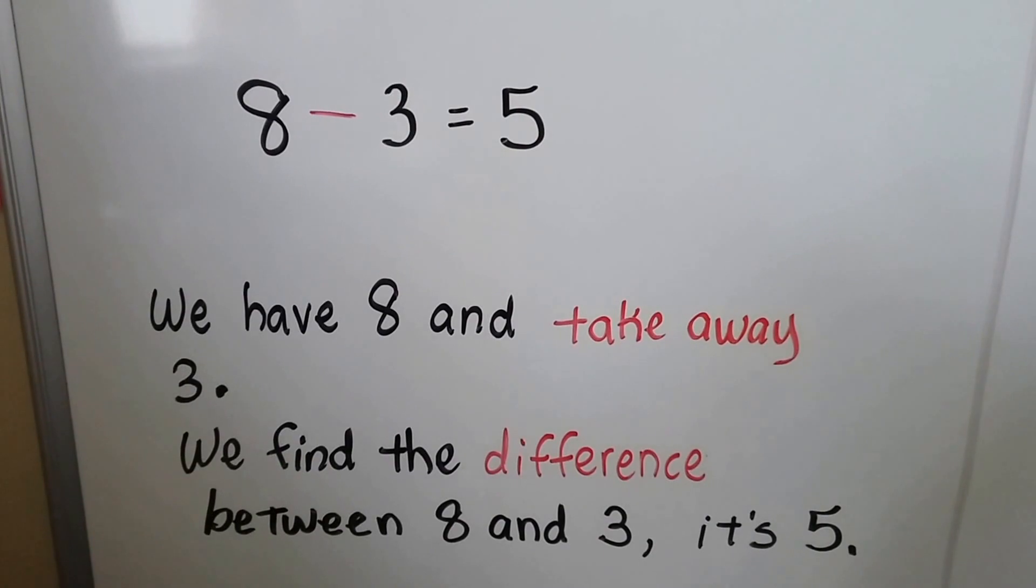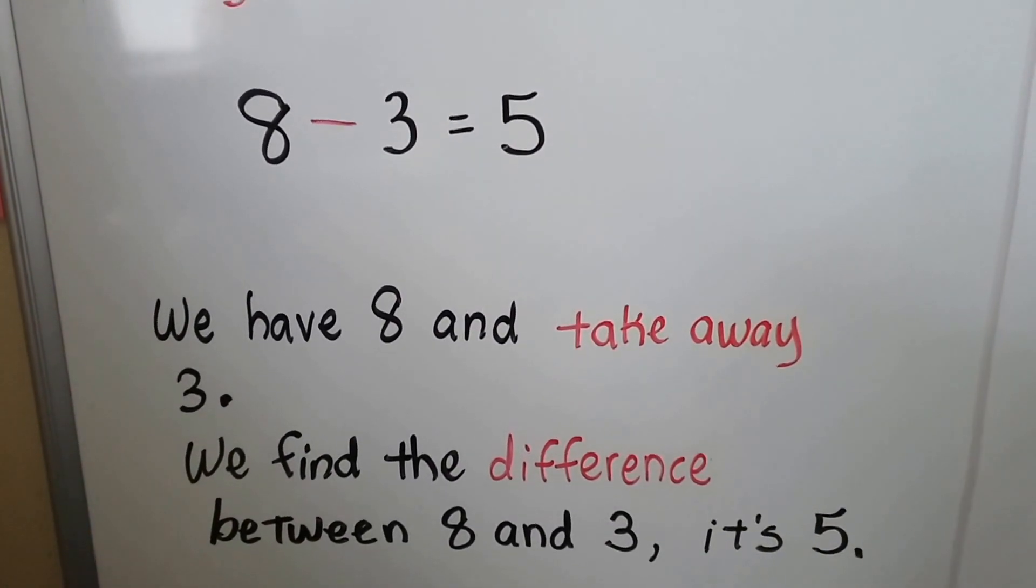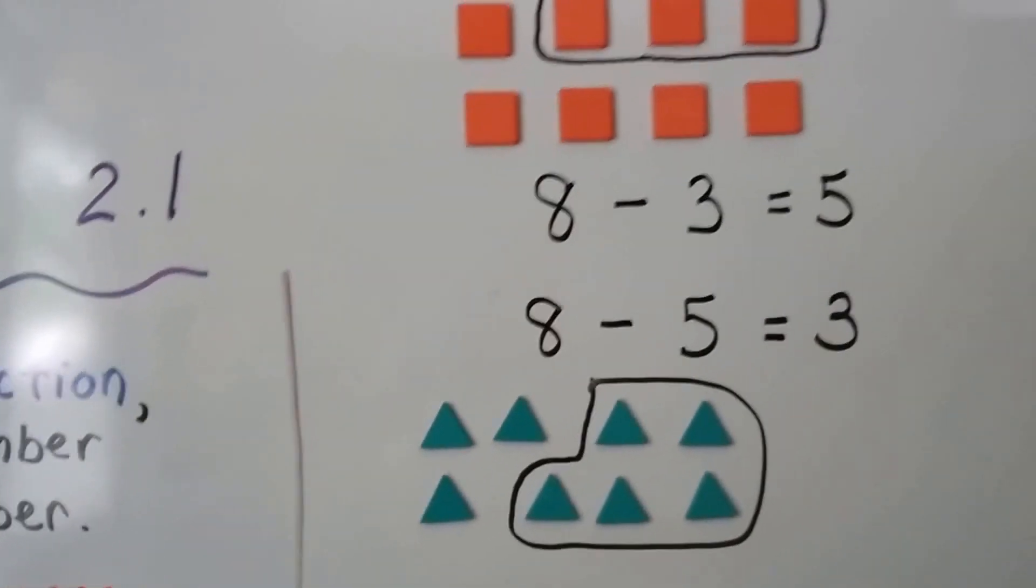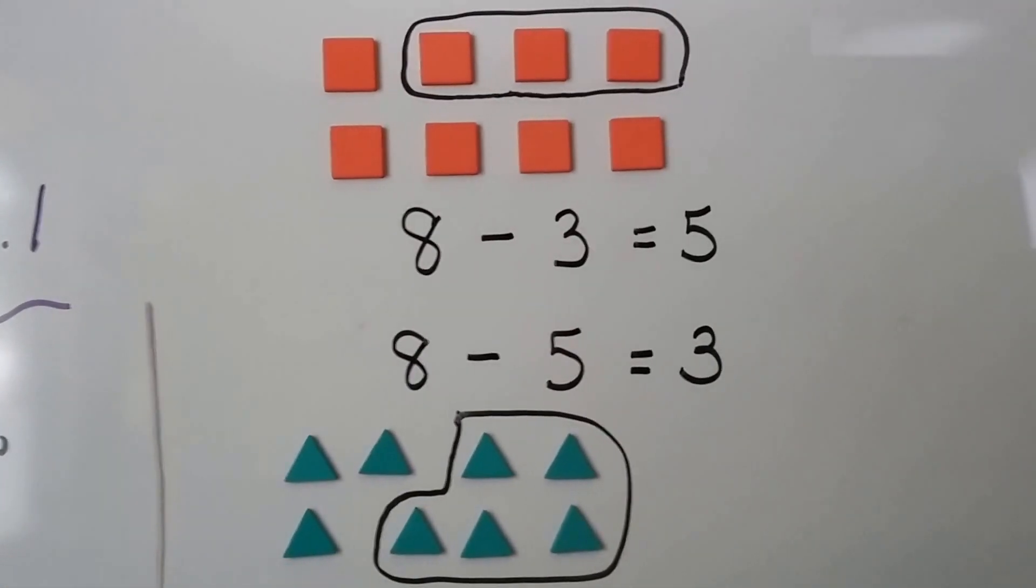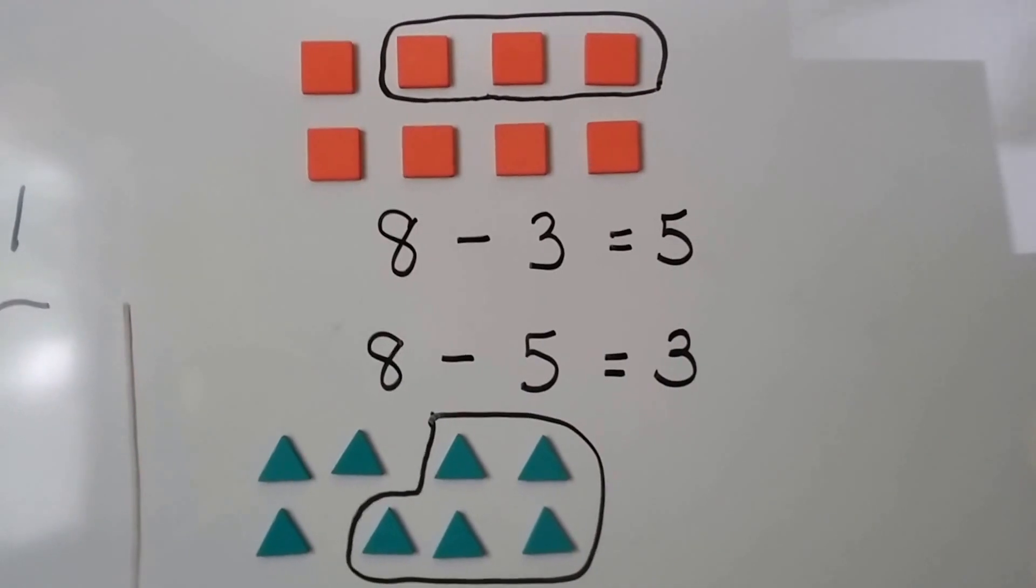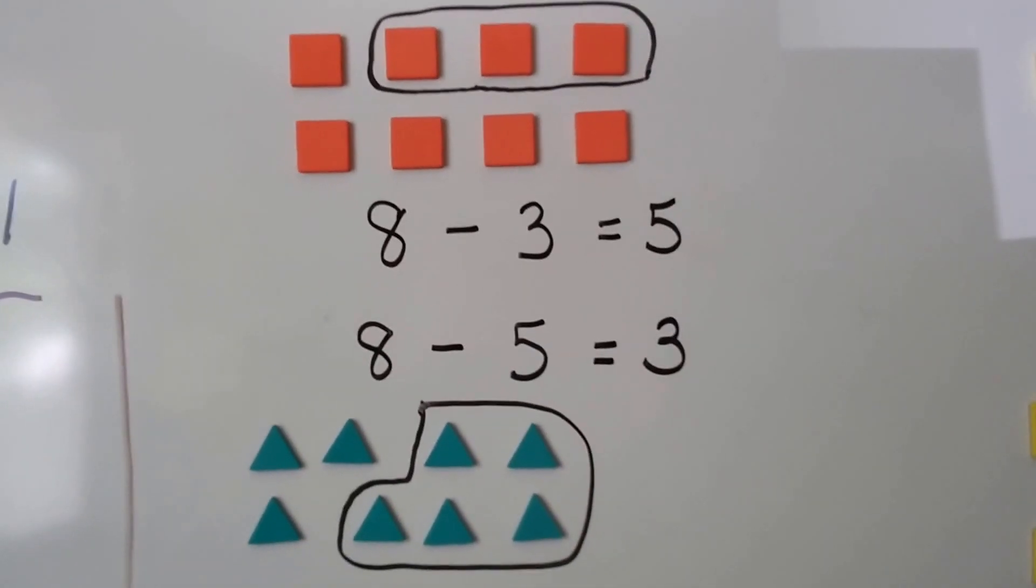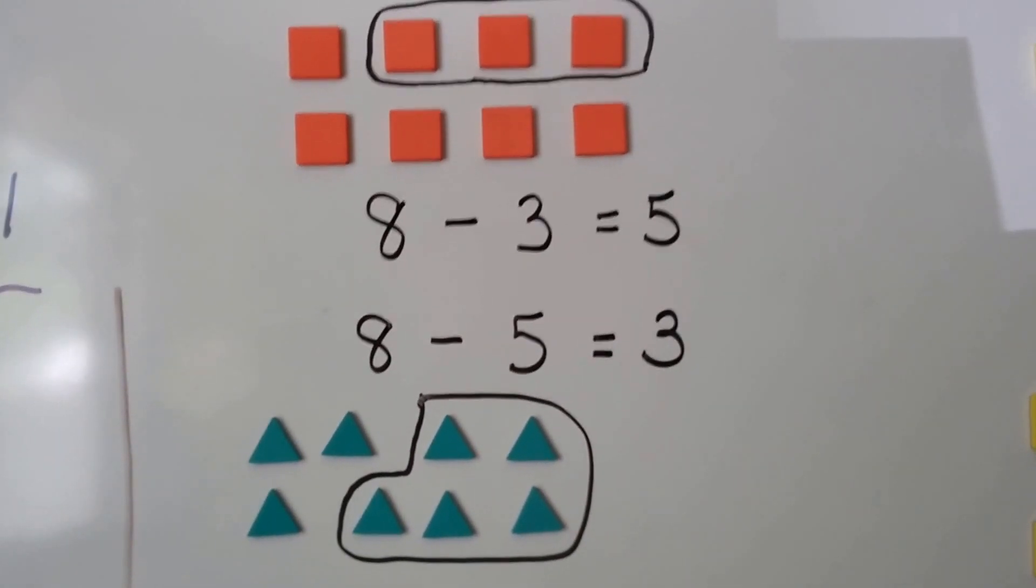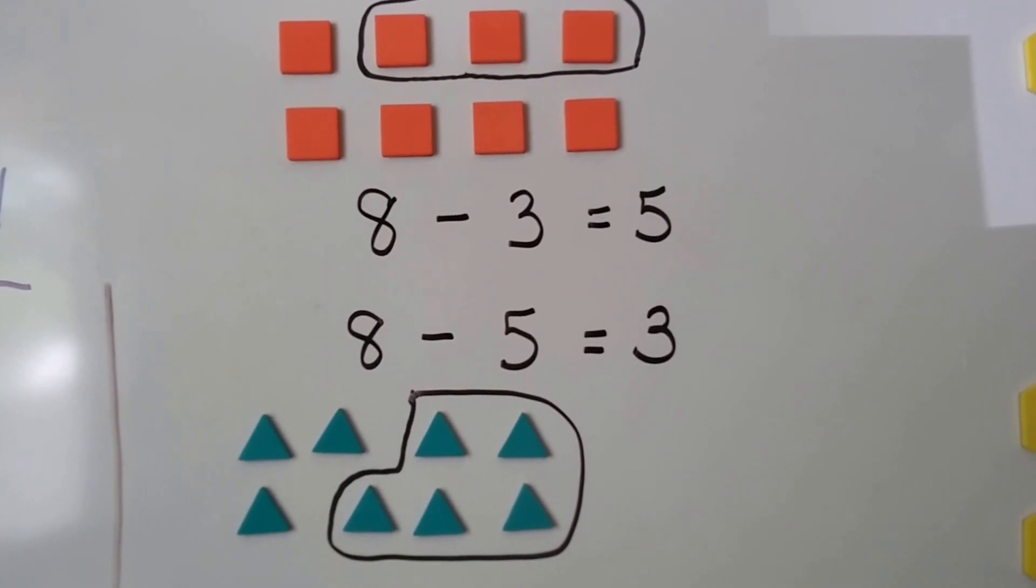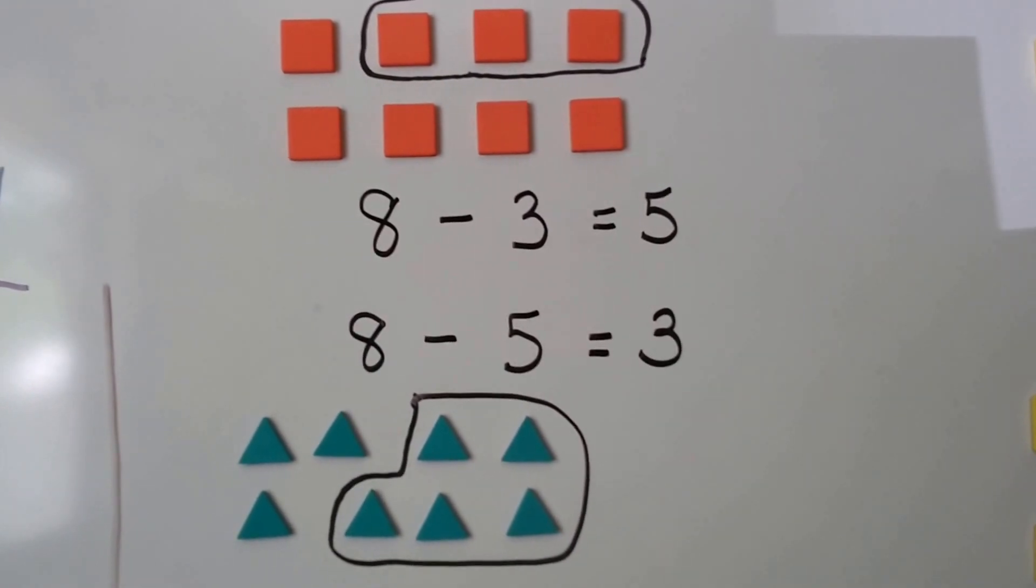We have 8 orange squares. If we take 3 away, we're going to have 5 left. And if we have 8 green triangles and we take away 5, we'll have 3 left.